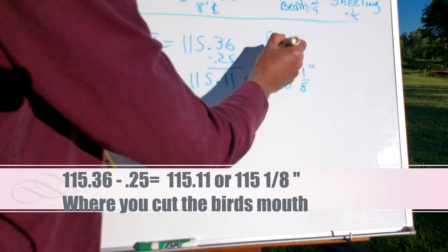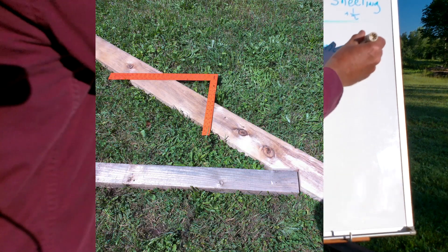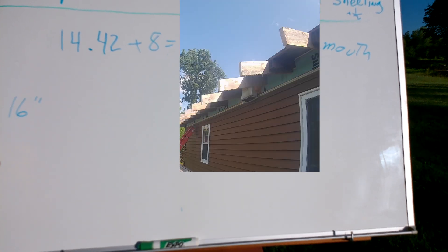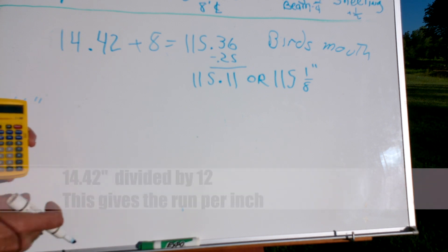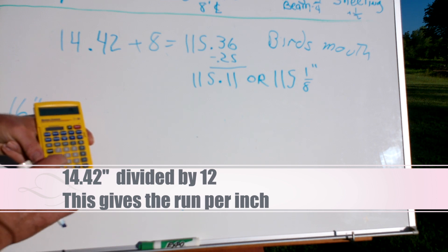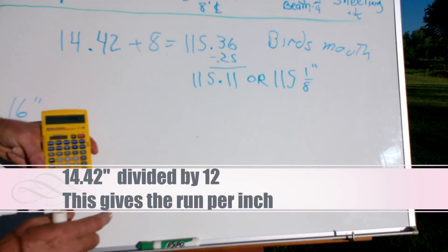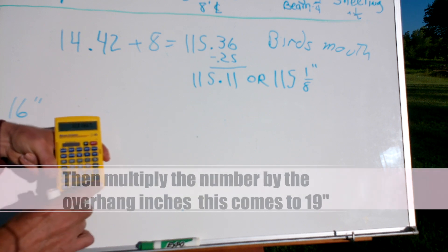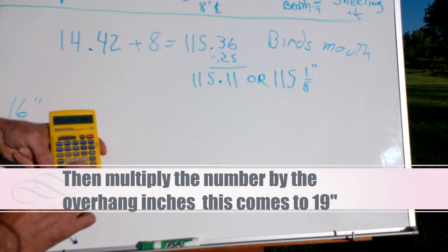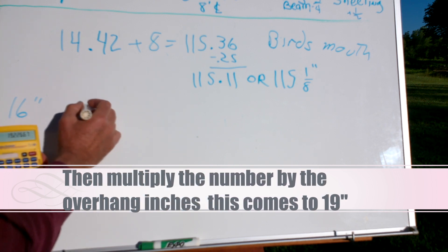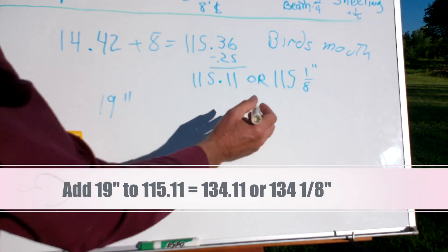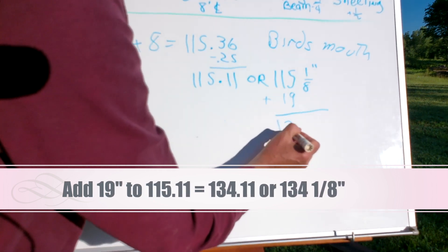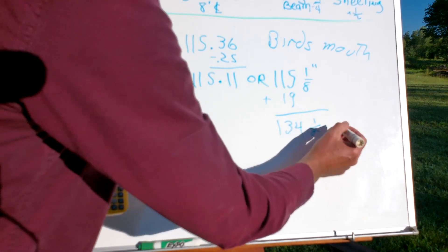We have a 16-inch overhang. Take 14.42 — the rafter length per foot of run — divide it by 12, then multiply by 16, and that gives you 19 inches. Add that 19 inches to 115 and 1/8, and you get 134 and 1/8 inches. That's the total length of the rafter.